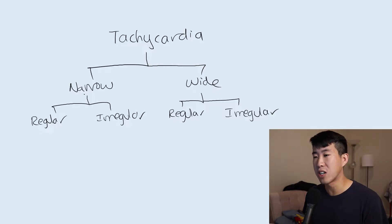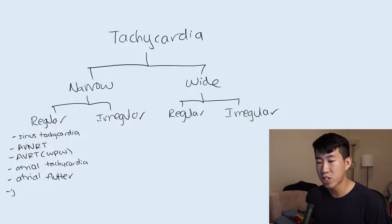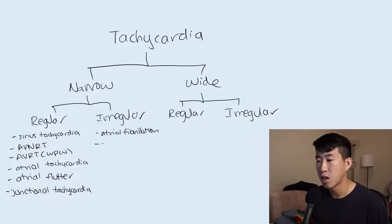For regular narrow complex tachycardia, our options are sinus tachycardia, AVNRT, AVRT or Wolff-Parkinson-White syndrome, atrial tachycardia, atrial flutter, and junctional tachycardia. For irregular narrow complex tachycardia, the most common ones are atrial fibrillation, multifocal atrial tachycardia, and atrial flutter with variable AV conduction.